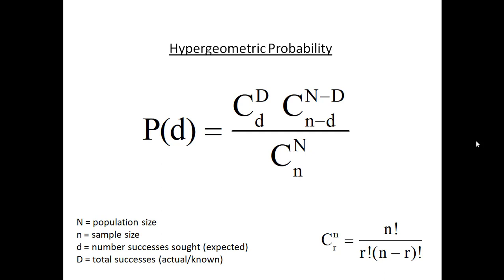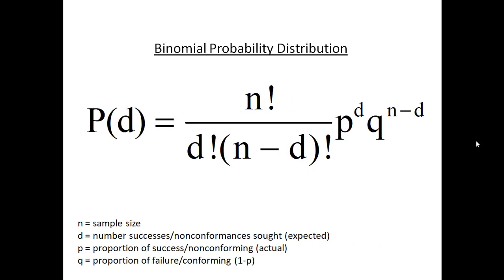The hypergeometric probability has many, many applications, and it always applies when you've got a domain of interest where you understand the entire domain. Next in our discrete probabilities is the binomial distribution. The binomial distribution is used whenever you have a fixed outcome from your trials that is one of two things.